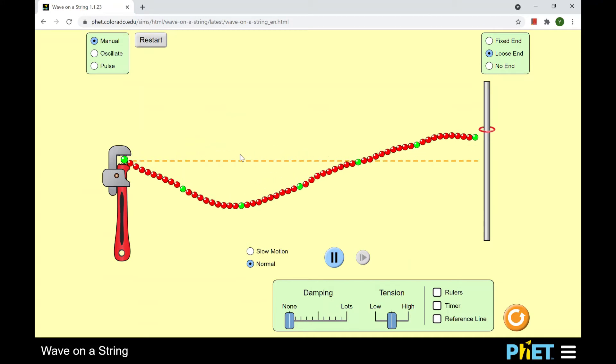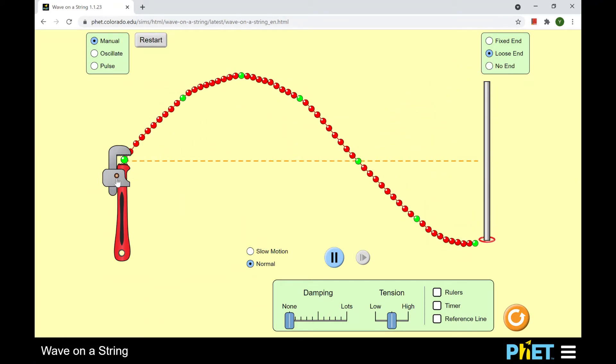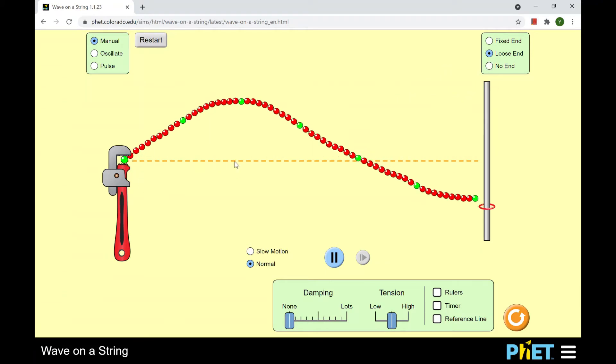Now you count the number of quarter waves. Not the number of half waves. It's the number of quarter waves will be our harmonic number. So here you have node to antinode one,